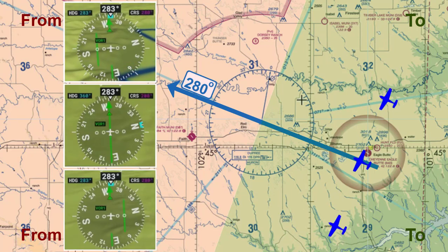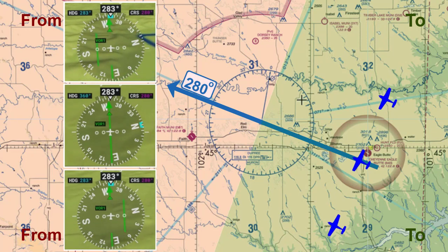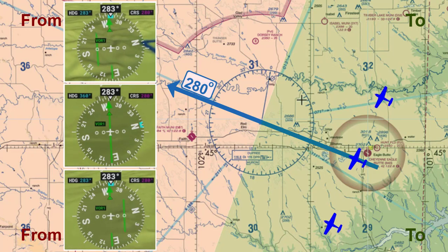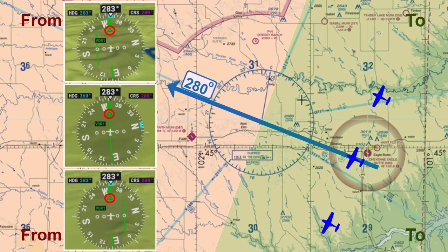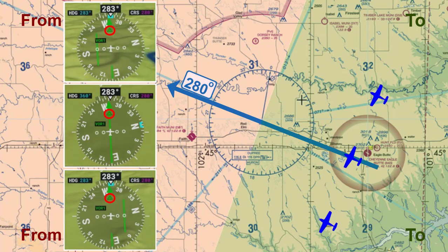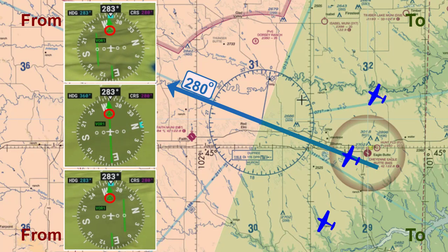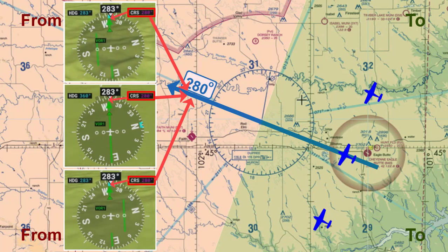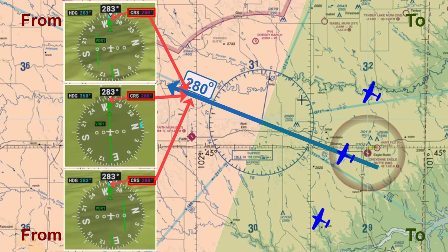We will pretend we have three flights going at the same time parallel to each other. Notice all three planes' horizontal situation indicators, or HSIs, have the small arrow pointing to the larger arrow, indicating all three of them are on the TO side of the VOR as it relates to the 280 degree radial. Also notice the CDI is set for the 280 degree radial on all three flights.